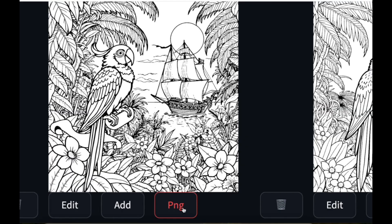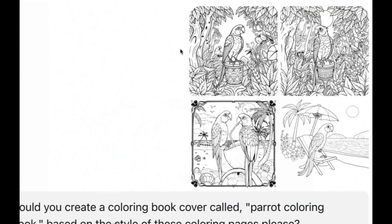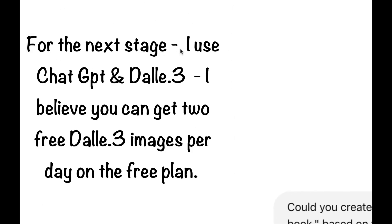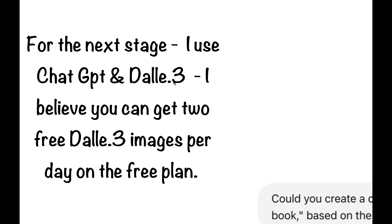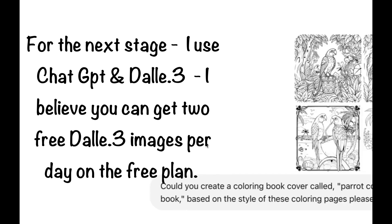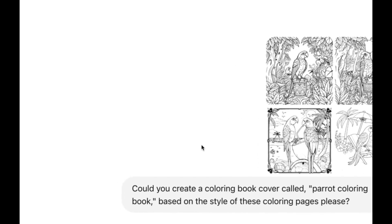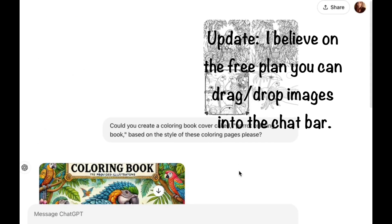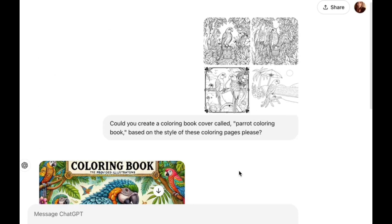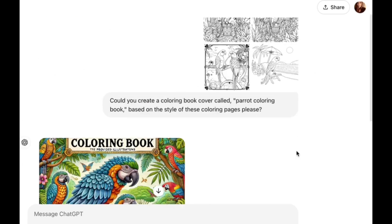I've got a couple of different options for you. On the free version of ChatGPT, I believe you can get two images a day from DALL-E 3, and any more than that you need to pay. I do pay for my Pro subscription, but I have a workaround. I'm presuming you can still upload images to ChatGPT on the free version — in any case, this is just a method I use and you don't have to upload images, it's just something I do as an extra.